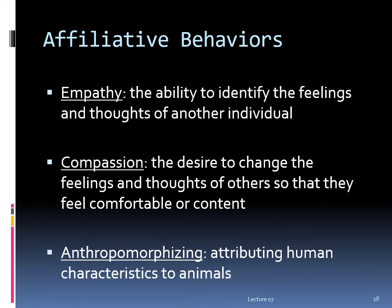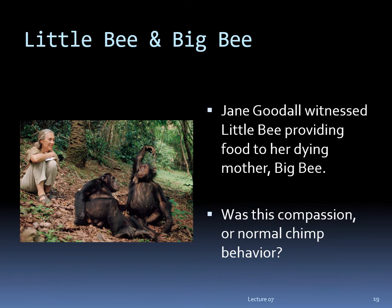Some primatologists criticize attributing compassion to non-human primates as anthropomorphizing — giving human characteristics to animals when those characteristics are not actually present. What we see as acts of compassion may just be animals treating sick or injured animals normally. For example, Jane Goodall recounts a story about a middle-aged female chimp named Big B who had been severely injured. While she lay dying, her adolescent daughter Little B brought her food. Goodall interpreted this as compassion — a desire to ease the mother's suffering. But food sharing is common among healthy chimps under normal circumstances; Little B may simply have been treating her mother the same way she would on any other day.